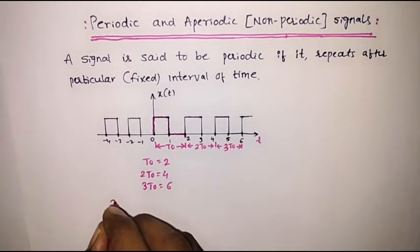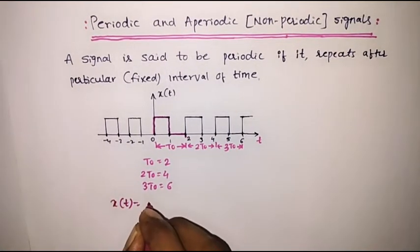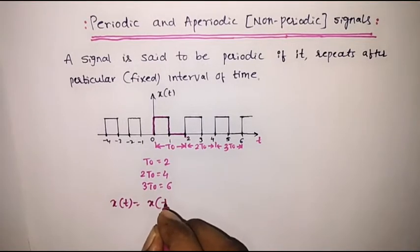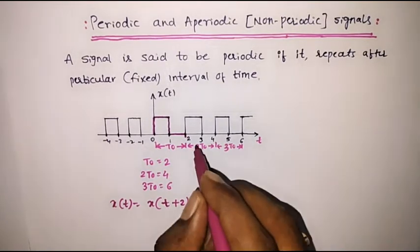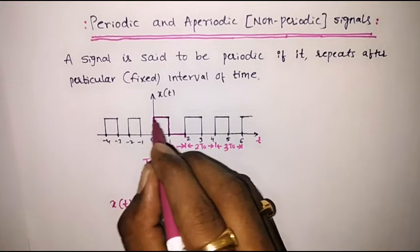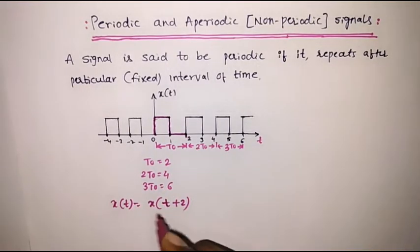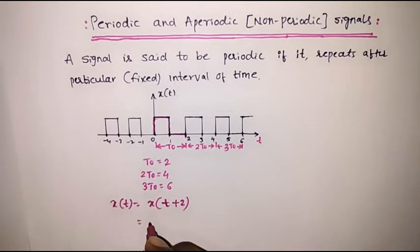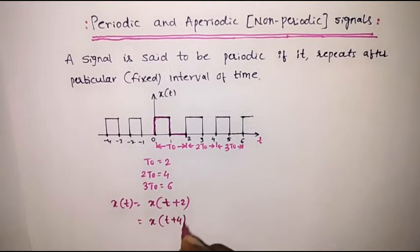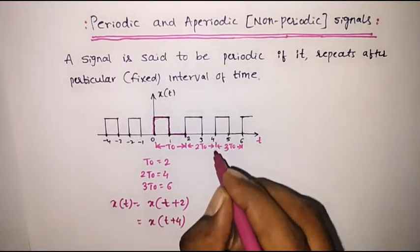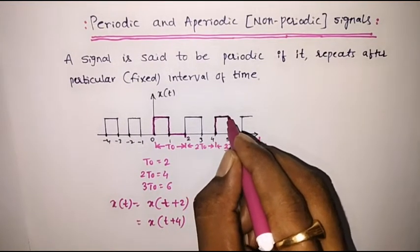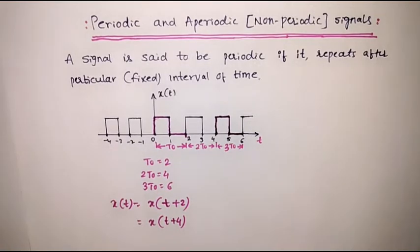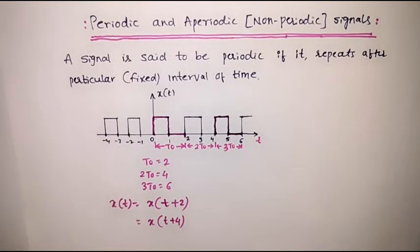Now I can say x of t is equal to x of t plus 2 — that is, when time is incremented by 2, the same cycle appears. Or I can say x of t plus 4, that is when time is incremented by 4, again the same cycle repeats. So this kind of signal repeats, and is known as a periodic signal.